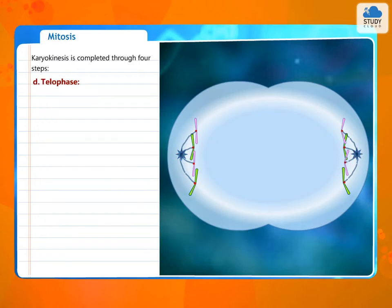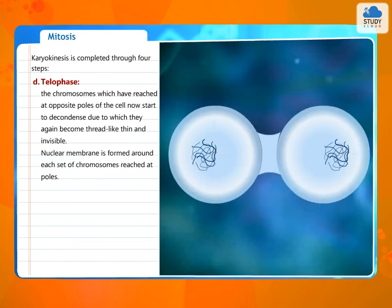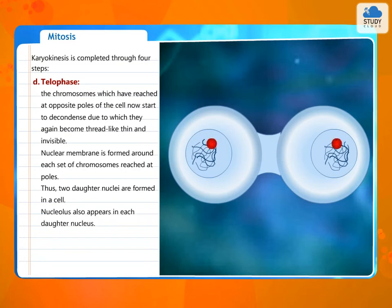D. Telophase. The chromosomes which have reached at opposite poles of the cell now start to decondense due to which they again become thread-like, thin and invisible. Nuclear membrane is formed around each set of chromosomes reached at poles. Thus, two daughter nuclei are formed in a cell. Nucleolus also appears in each daughter nucleus. Spindle fibres completely disappear.